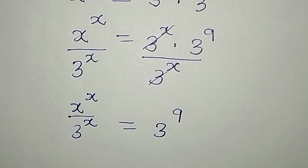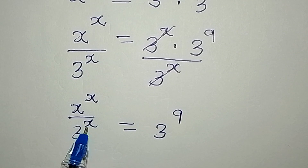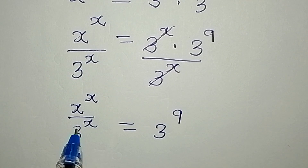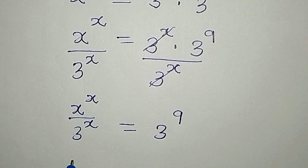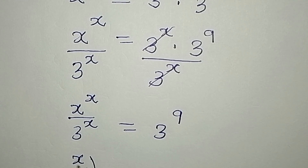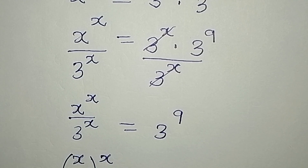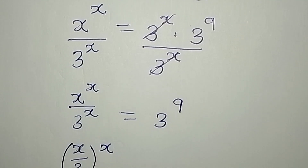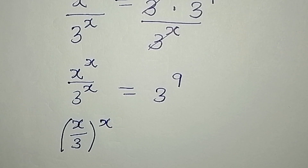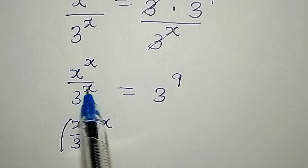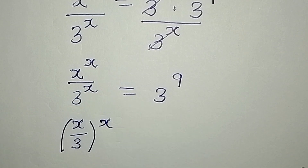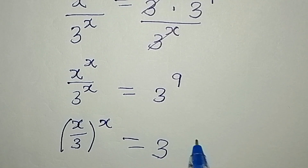Because we have the same power on both terms, we can combine the bases: x over 3, all to the power of x, equals 3 to the power of 9.